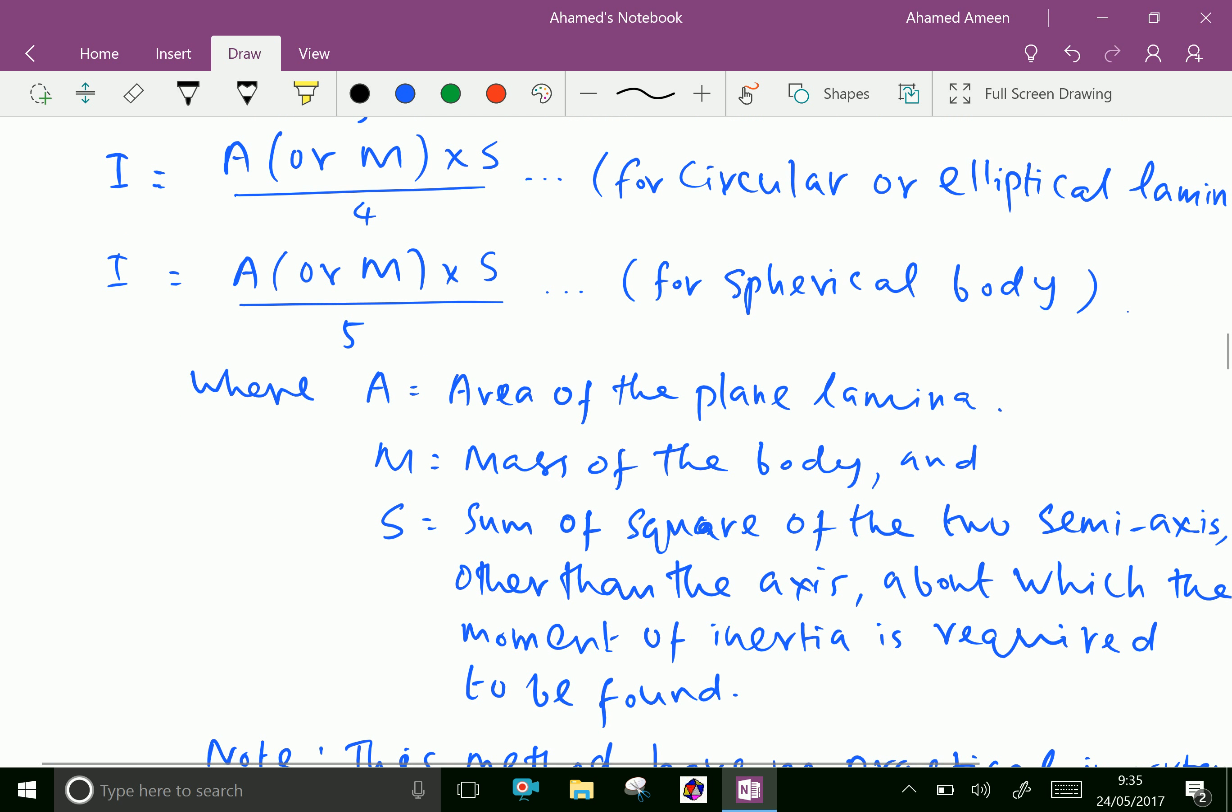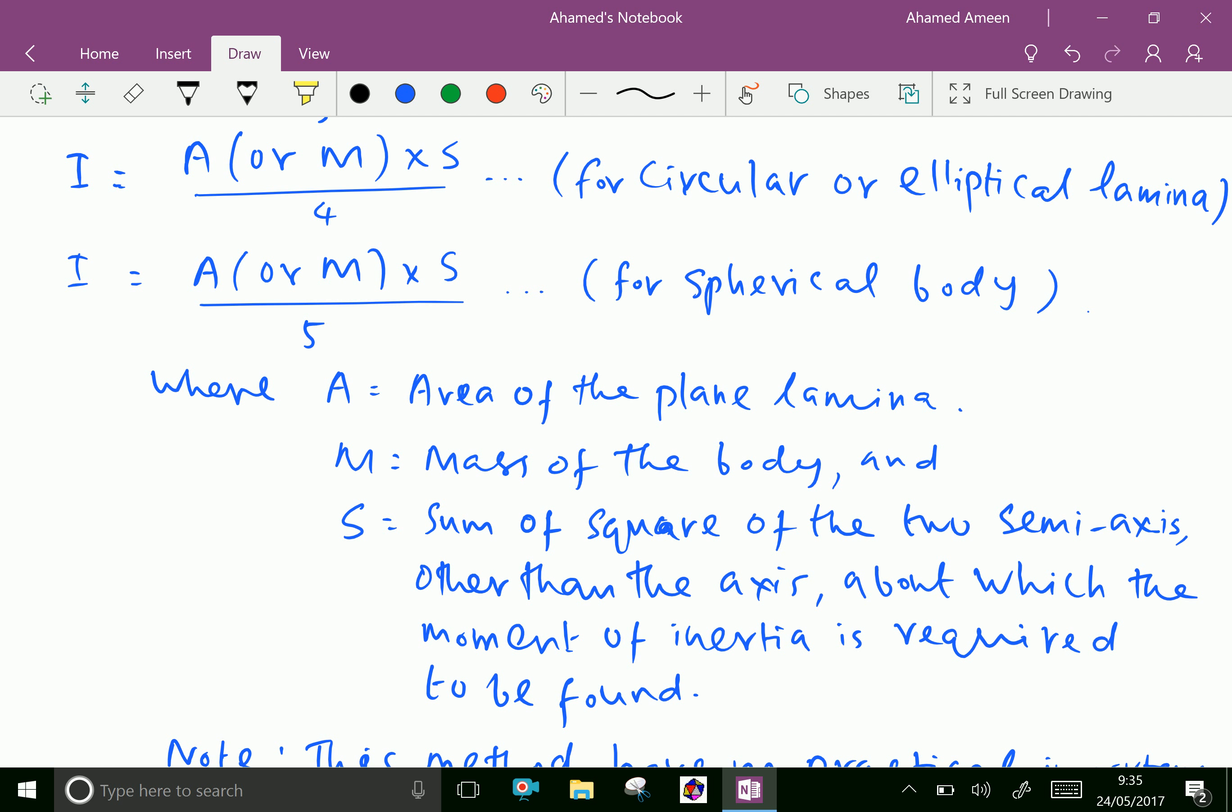S is sum of the square of two semi-axis means x and y axis, means square of x by 2 squared and y by 2 squared. S equal to sum of square of two semi-axis other than the axis about which the moment of inertia is required to be found.